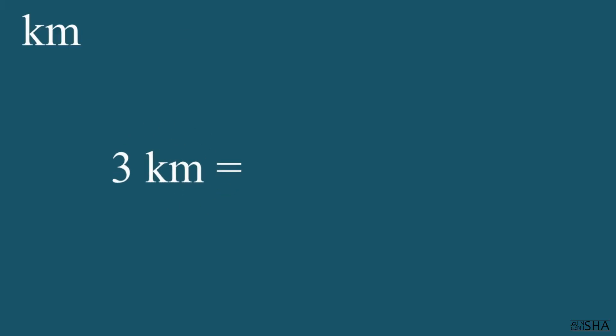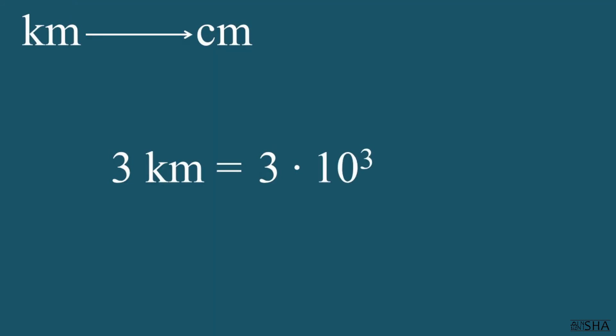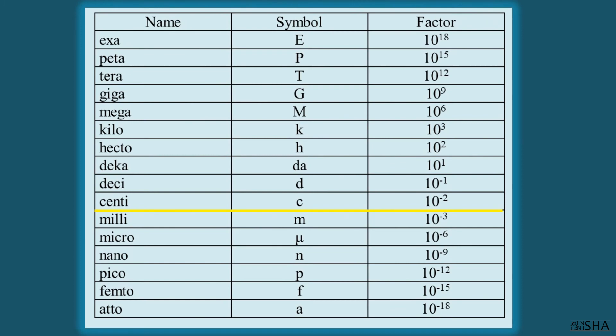Let's convert three kilometers to centimeters. Write down three. Then, according to the first rule, we convert kilometers to meters. It means that instead of the prefix kilo, we should write down a factor, ten to the power of three.